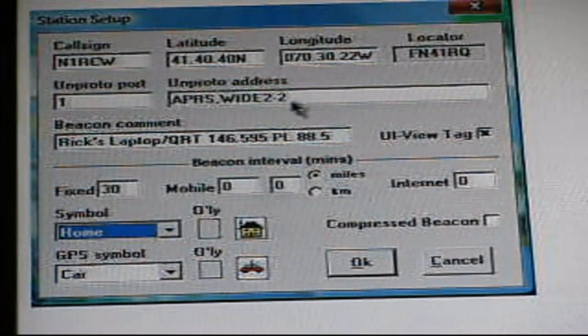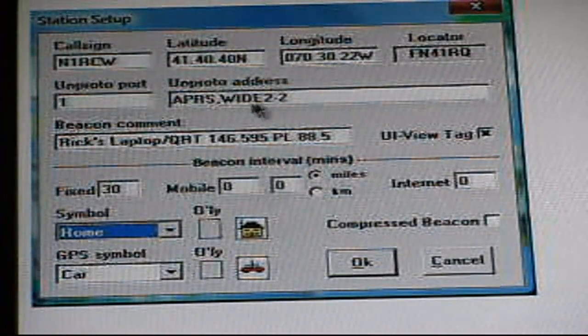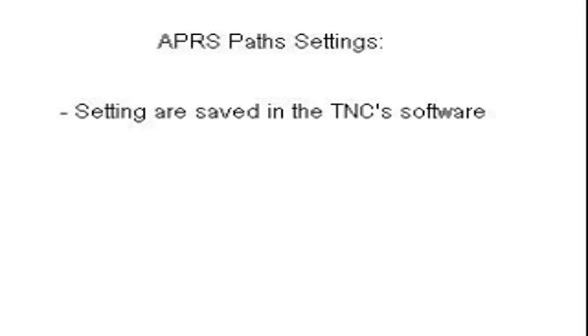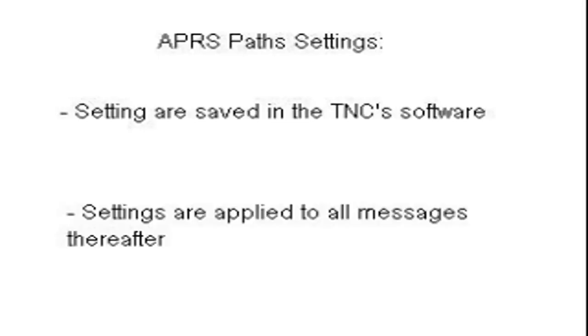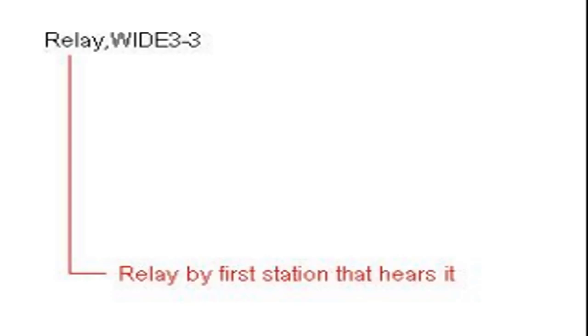APRS stations can be configured to use digipeaters to expand their usable coverage area. These settings are configured within the TNC and are applied to every transmission thereafter. Let's take a look at a sample TNC path setting and break it down. Here is an example of an operator that has selected a relay wide 3x3 setting. What this is really saying is the station wants their transmissions to be rebroadcast, or digipeated, by any relay that hears it.